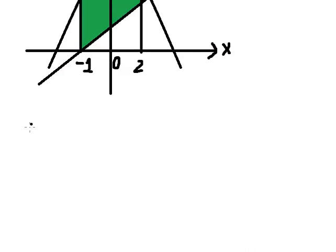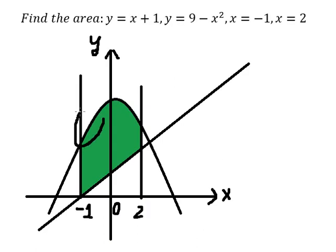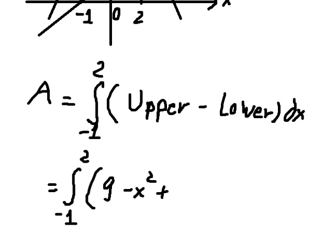We have the area, which is the integration from negative one to positive two. We have the upper function minus the lower function. Based on the graph, the upper function is nine minus s squared, and the lower function is s plus one.